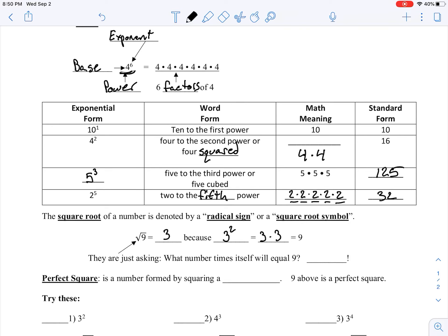And that is equal to 9. So all it's asking us here is what number times itself will give us 9? And we know that 3 times itself will give us 9, because 3 times 3 is 9. So 3 is our answer here.